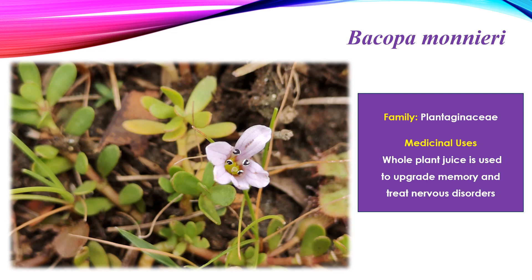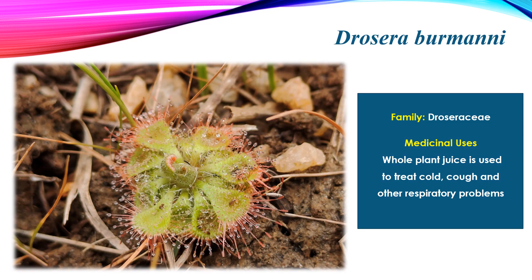Next is Bacopa monnieri, known as Brahmi. This plant belongs to Plantaginaceae and has many uses in Ayurveda. It is used in various diseases and disorders. The main property of this plant is that the whole plant juice is used to upgrade memory and also used to treat nervous disorders.